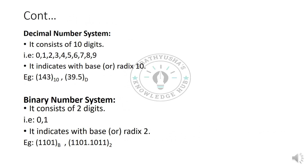The decimal number system uses base 10, represented with 10 digits from 0 to 9. How do we indicate the base or radix for the decimal number system? For example, the number 143 in decimal can be represented with a subscript 10, or with the letter D — so D represents decimal. In these two forms we can represent the decimal number system.